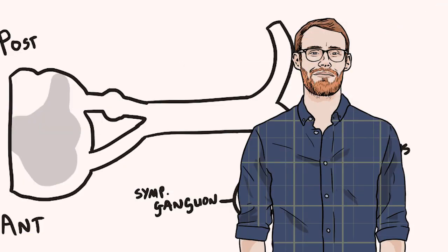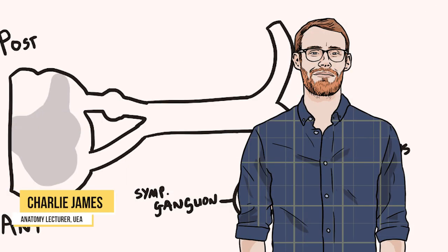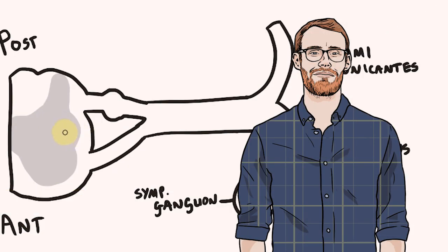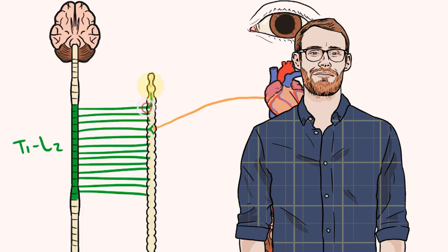Hello! In this video I'll be drawing the sympathetic nervous system. Now this is an area that causes lots of confusion and I completely get that. We have weird names like grey rami communicans and postganglionic fibres, and that's before we even get to the sympathetic chain.